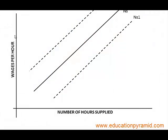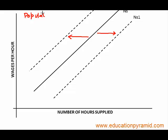The shift of the supply of labour curve towards the right or left is not due to a change in the wage level. Rather, it is due to other factors, like an increase in population. If more people come into the country or the market, supply of labour will increase and the curve shifts right. If people leave the market or the country, supply of labour will shift towards the left.